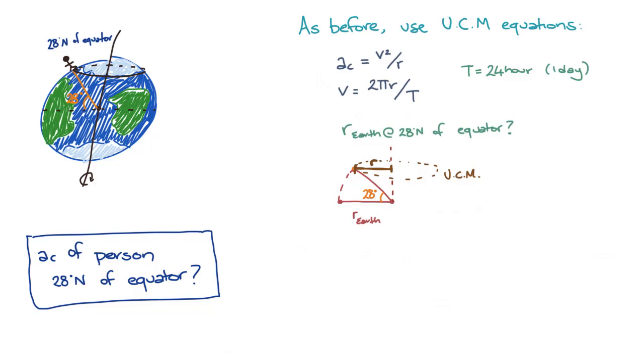To work out the length of the radius r, we can use trigonometry. The radius of the path and the axis of the Earth's rotation meet at right angles. If we label this angle theta, we can see that the angle theta is 90 minus 28 degrees, since the angle between the radius of the equator and the axis of the Earth is 90 degrees in total.